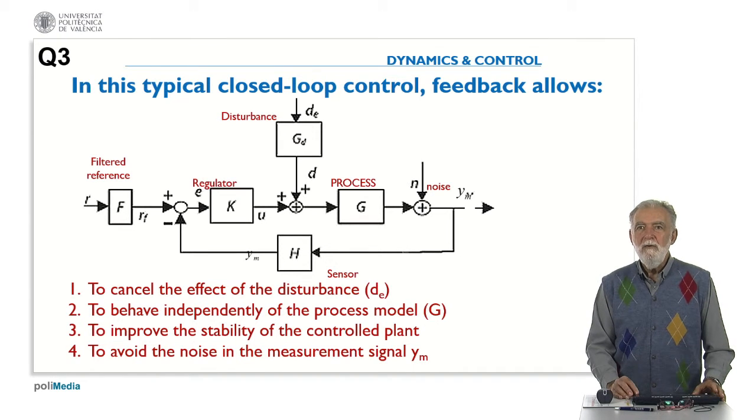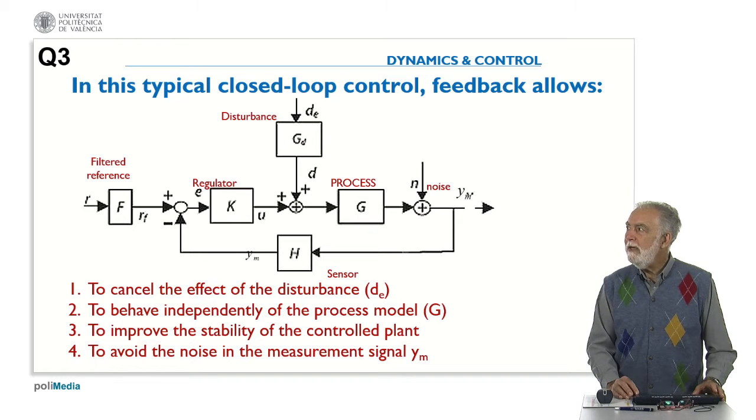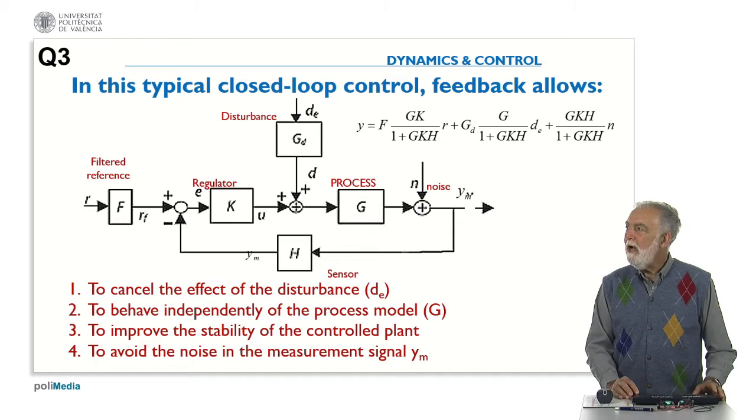So now let's see what you have thought about question number three. What feedback allows in the typical closed-loop control? We saw that the output is related to the three inputs: the reference, the disturbance, and the noise.